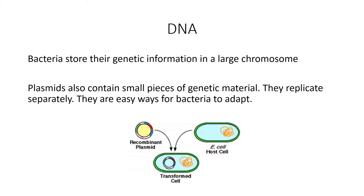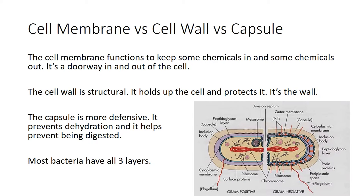That was a lot of pieces at once — let's look at a few more closely. The bacteria has the nucleoid, which contains most of its chromosome, and also plasmids, which are small circles of genetic material. The benefit of plasmids is that they can come and go, be absorbed, released, and traded, giving the bacteria a lot of flexibility. The cell membrane, cell wall, and capsule are not exclusive — they're all stacked on top of each other.